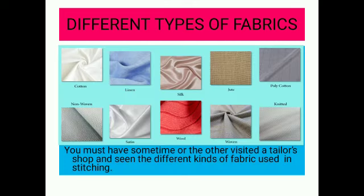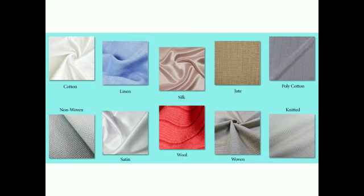You can see different types of fabrics: cotton, linen, silk, jute, wool. Sometime or the other you must have visited a tailor shop and you must have seen these different fabrics which are used in stitching. You can see the different fabrics — the appearance of silk is quite different from others, that of satin, and jute which is slightly coarse.